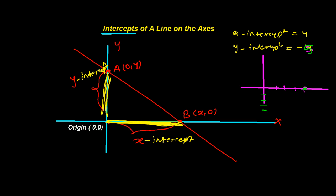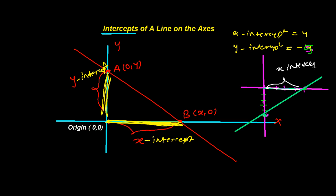So here are the two points, and the line is going through these two points. This length is our x-intercept, which equals 4, and this length is our y-intercept, which equals minus 5. This is how we understand intercepts from a graph.